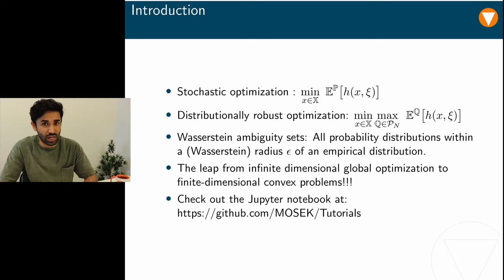Distributionally robust optimization is another approach for handling uncertainty. The key idea here is to find a solution vector that minimizes the worst-case expected cost. The worst-case expected cost is calculated over an ambiguity set, which is a family of probability distributions. The distributionally robust optimization problem, or the DRO problem, is therefore a minimax problem. You minimize the maximum expected loss.